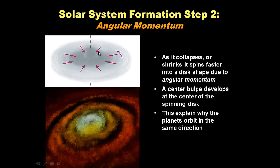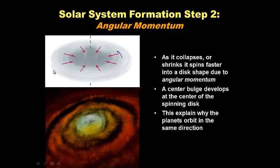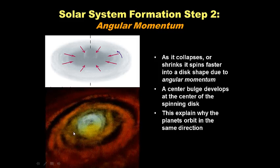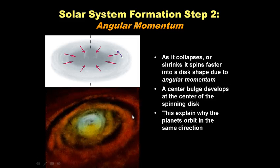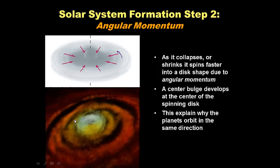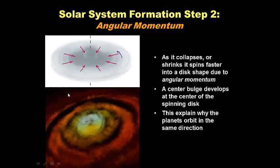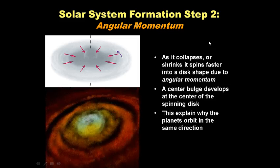As the nebula shrinks, these arrows show it shrinking and spinning. At the center of this disk is a bulge that will eventually form our Sun. Everything is spinning in the same direction — just like a pizza spins when you spin the dough. This explains why inner planets orbit the Sun faster and the outer gassy planets orbit the Sun slower. That's angular momentum.